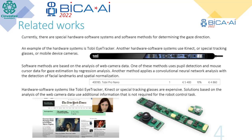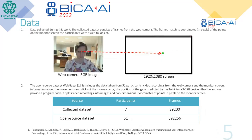Solutions based on the analysis of web camera data use additional information that is not required for robot control tasks. The first dataset was collected during this work. The collected dataset consists of frames from the web camera. The frames correspond to coordinates in pixels of the position on the monitor screen that participants were asked to look at.